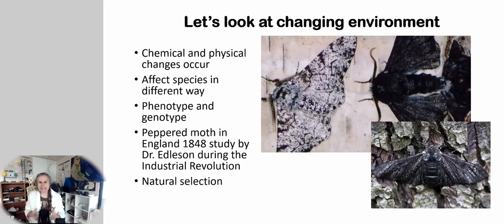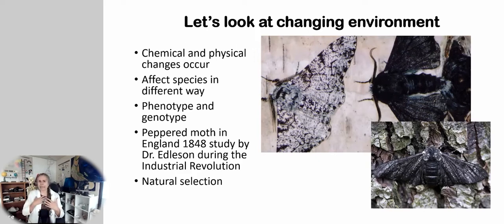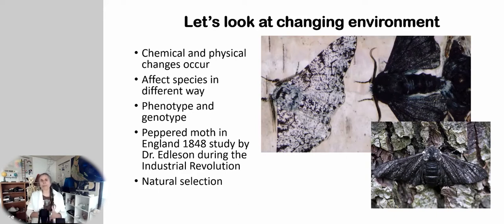Why did the moth turn black? Because it could then blend in, so birds wouldn't eat it. This was the first example of people realizing that our environment changes organisms. During the Industrial Revolution, they stopped coal burning and learned about electricity because people were getting sick from the coal soot. This study by Dr. Edelson during the Industrial Revolution was the beginning of understanding natural selection — you've probably heard of Darwin's theories. This is when we first started to realize the environment changes organisms, though not all the time.